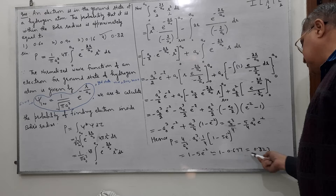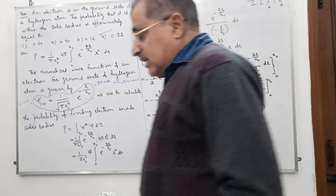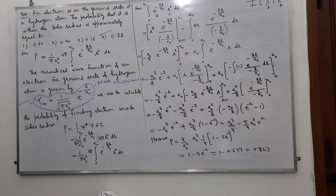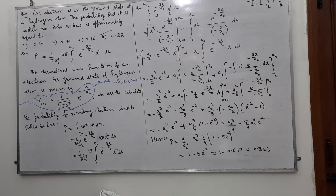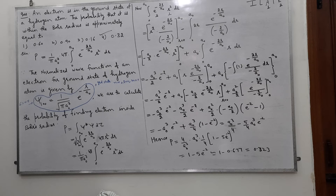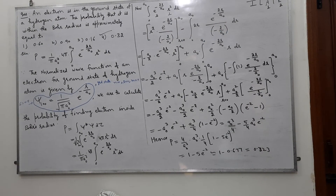Substituting the integration result and canceling π terms, we get the probability. Calculating numerically: 1 − 5e^(−2) gives approximately 0.323. So the probability of finding the electron inside the Bohr radius is approximately 0.32. If you want the probability of finding the electron outside the Bohr radius, it is 1 minus 0.32 = 0.68. So 32% within and 68% outside the Bohr radius.